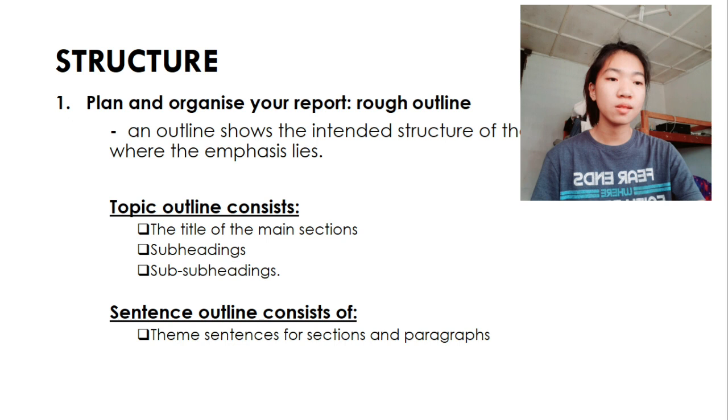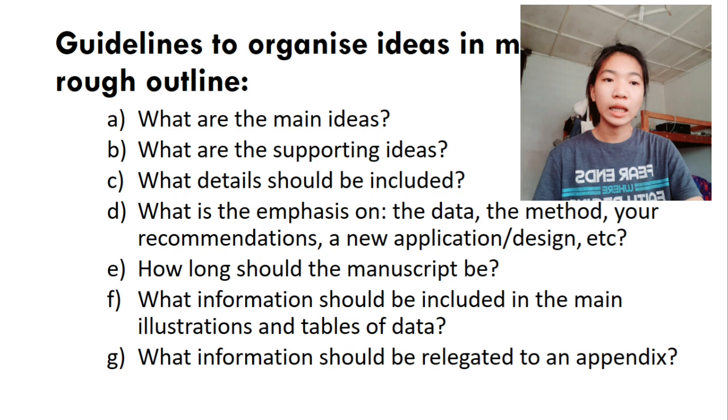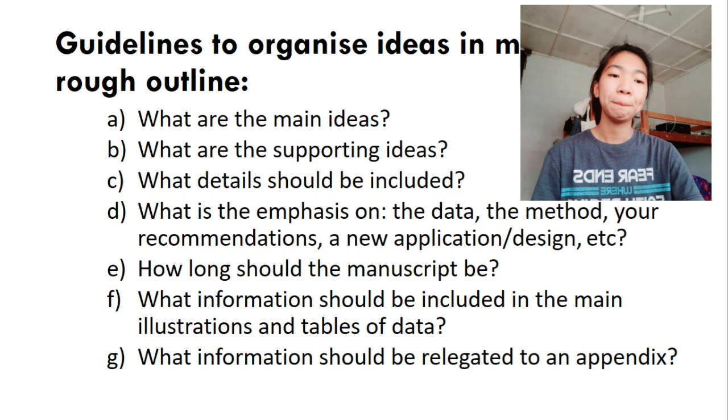Here are some guidelines to organize ideas in making a rough outline. What are the main ideas? What are the supporting ideas? What details should be included? What is the emphasis on? Can be the data, the method, your recommendations, a new application or design, etc. How long should be the manuscript be? What information should be included in the main illustrations and tables of data? What information should be relegated to an appendix?